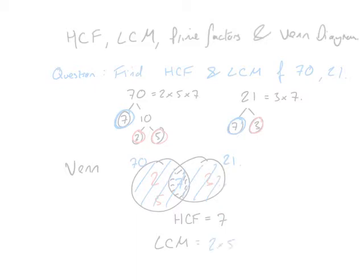Now the lowest common multiple is all of the numbers in the Venn diagram multiplied together, and in this case it gives us 210. But what is interesting is that these are the prime factors of 210.